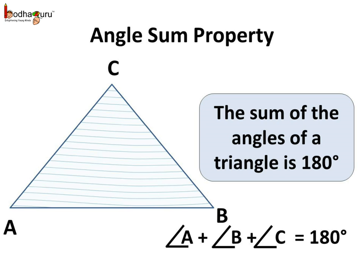So, we see, the sum of three angles of a triangle is equal to 180 degrees and this is known as the angle sum property of a triangle.